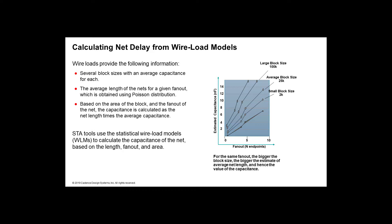There are multiple modes: top mode, enclosed mode, and segmented mode. Depending on the mode used, varying block sizes are selected from the wire load model selection table. You can also generate custom wire load models based on your design from specific place-and-route tools, and use those instead of the statistical wire load models provided by your library vendor.